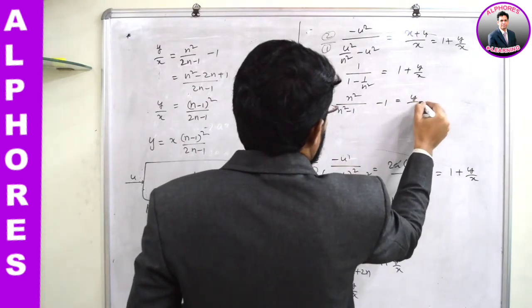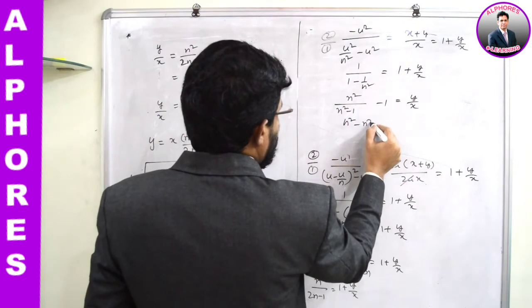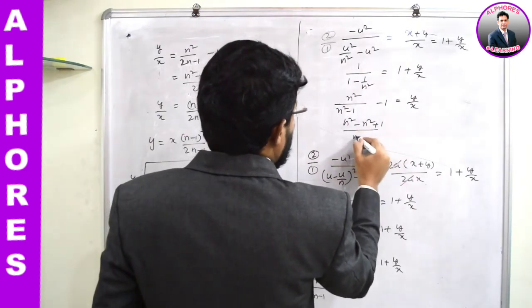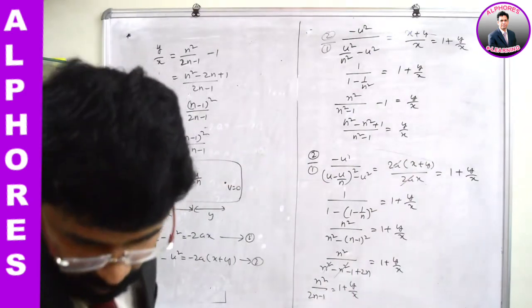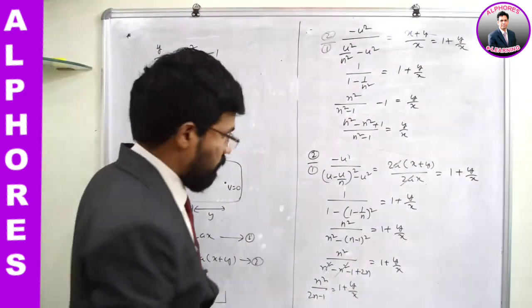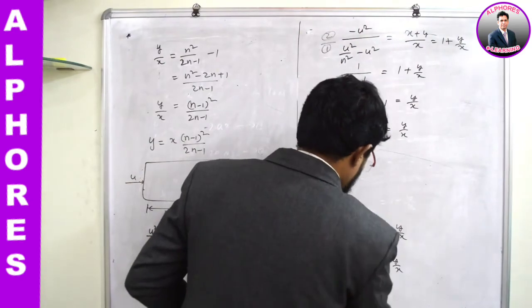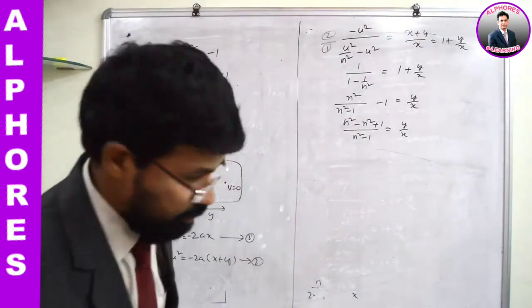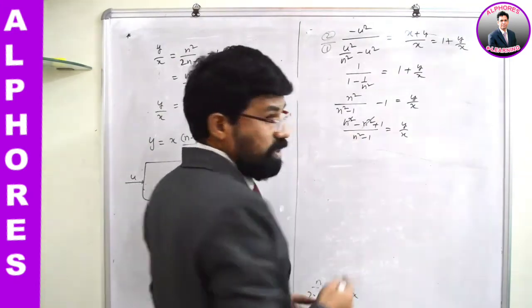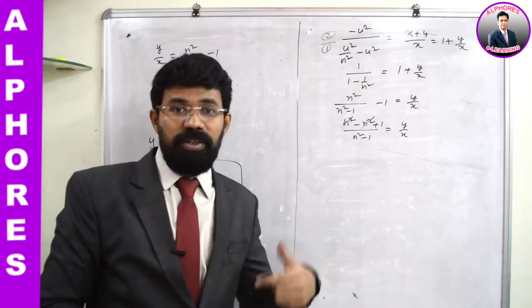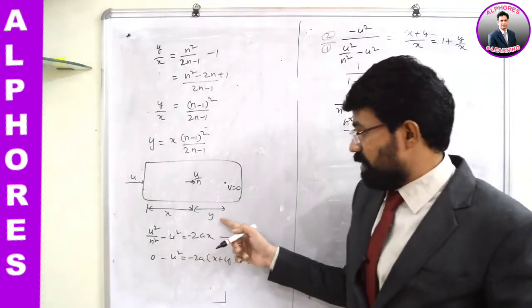Bringing 1 to the left side: y/x = n²/(n² - 1) - 1 = (n² - n² + 1)/(n² - 1) = 1/(n² - 1). Therefore the further distance the bullet must travel is y = x/(n² - 1).